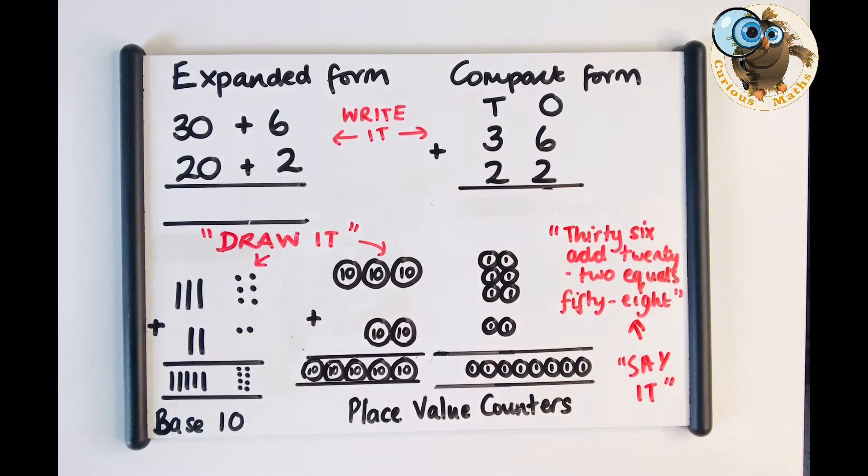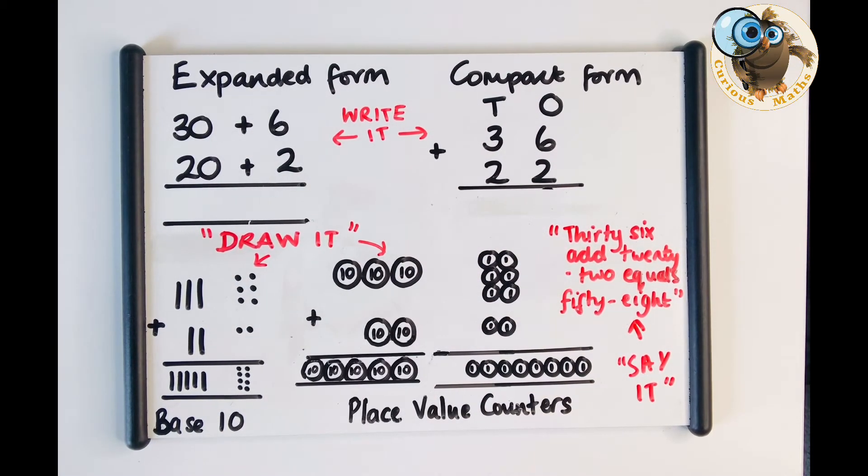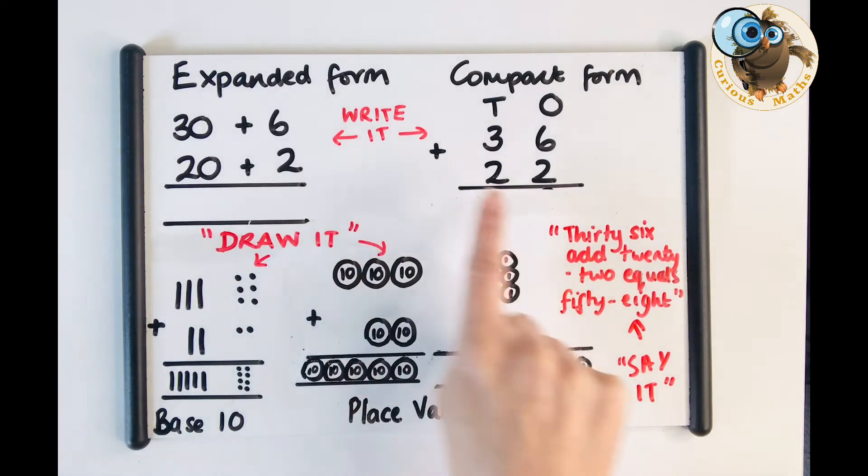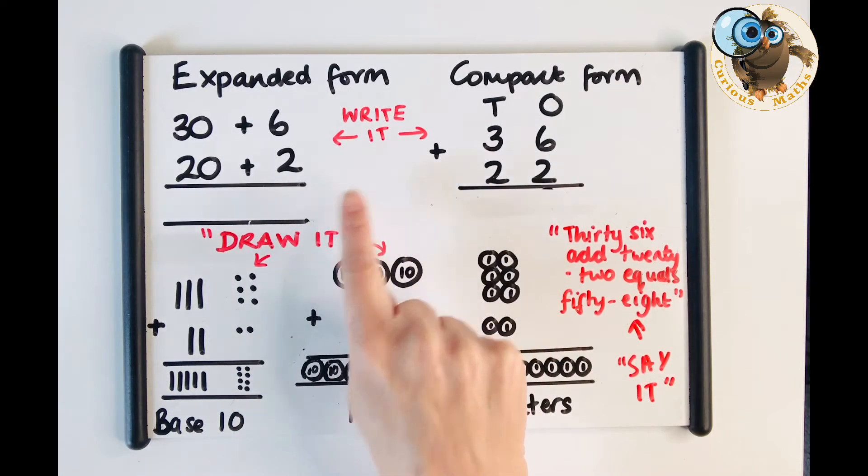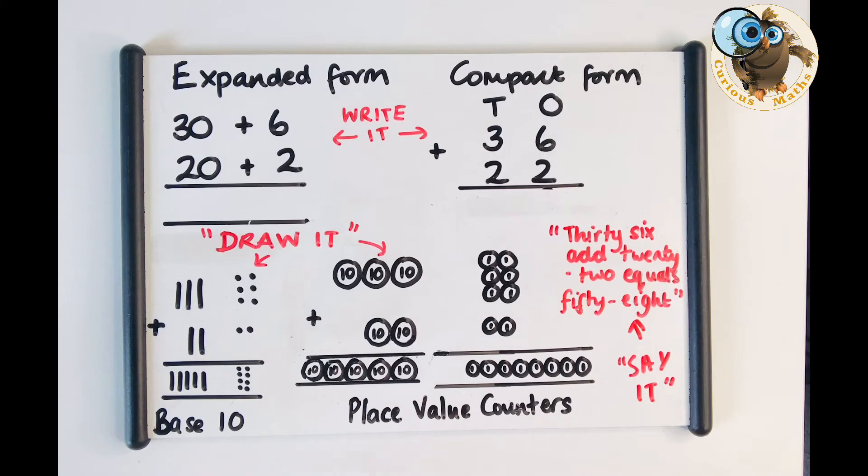Now before I talk about the draw it I just want to mention about the expanded form so I do recommend you check your calculation policy if you're a teacher to make sure how you go from partitioning horizontal method to a vertical method and it could well be that you have an expanded form in your calculation policy and if you're a parent and you're not sure have a look on your school's website or ask your class teacher and they'll be able to tell you.